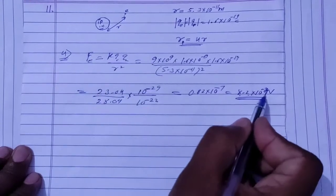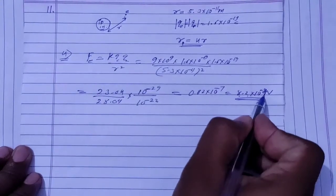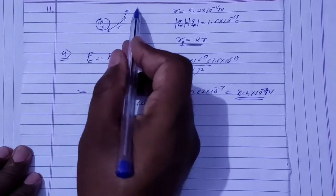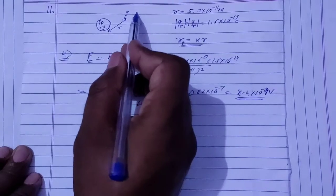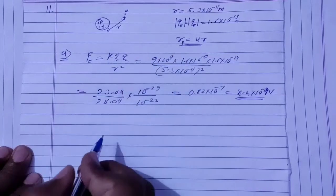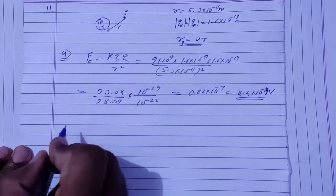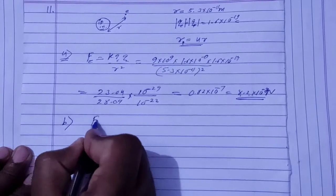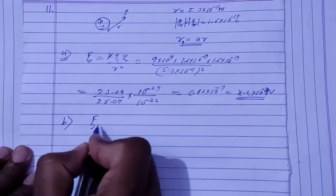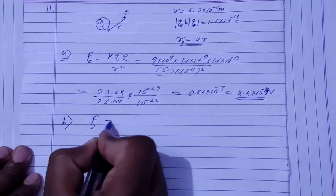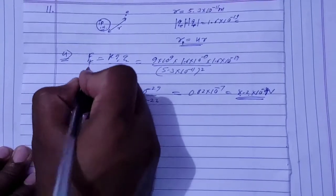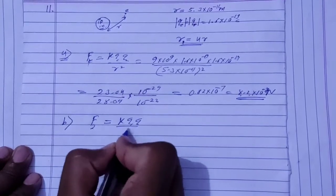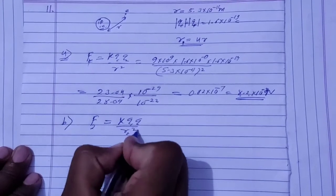Now for Part B, the electron is excited to the next state. We need to find F2. Since R2 = 4R1, the formula becomes F2 = KQ1Q2 / (4R1)², which simplifies to (1/16) × KQ1Q2 / R1².